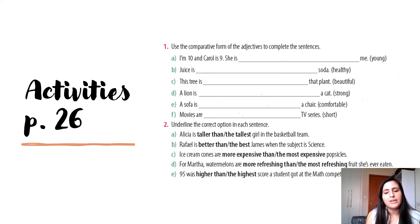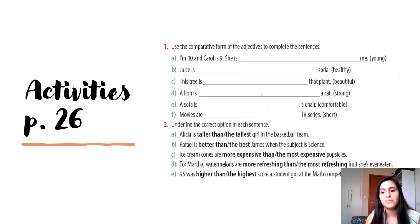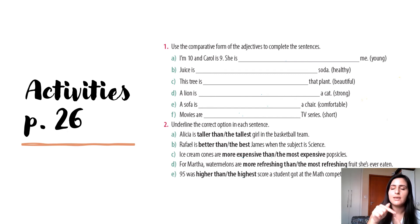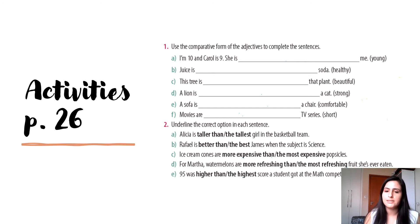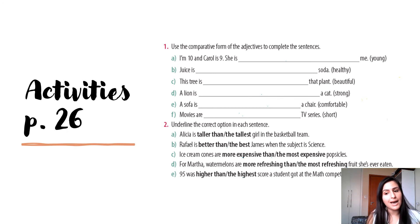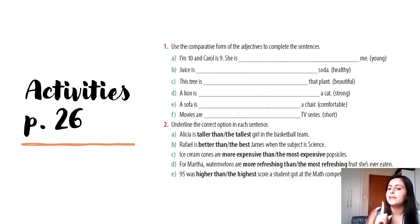Então, observe. Eu estou comparando Alicia com uma colega do time de basquete ou com todo o time? Alicia is the tallest girl in the basketball team — porque eu estou comparando Alicia com todo o time, e não somente com uma colega. So I use the superlative form, 'the tallest'. Agora, eu quero que vocês pensem um pouquinho, releiam os exercícios e tentem responder. Now we are going to check — vocês podem pausar o vídeo, responder, e em seguida conferir as respostas. Let's go.